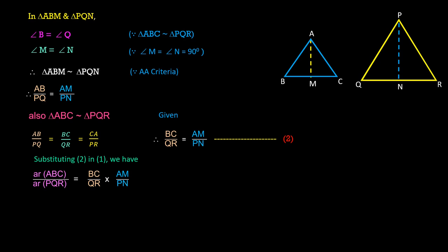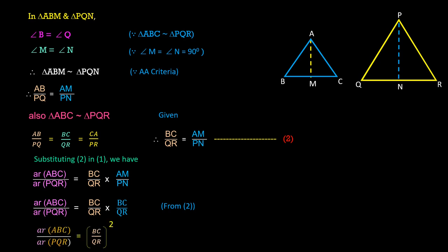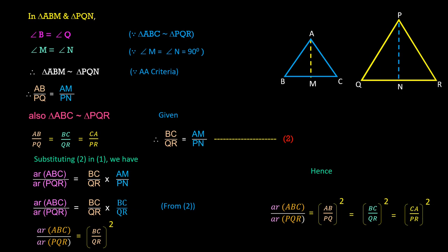Substituting back into equation 1, we have area of triangle ABC divided by area of triangle PQR equals BC by QR times AM by PN. In place of AM by PN, we substitute BC by QR. Hence, area of triangle ABC over area of triangle PQR equals BC by QR all squared. Since BC by QR equals AB by PQ and CA by PR, we have area of triangle ABC divided by area of triangle PQR equals AB by PQ all squared, or BC by QR all squared, or CA by PR all squared. Hence, proved.